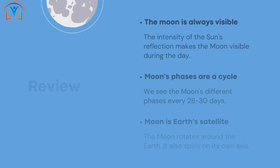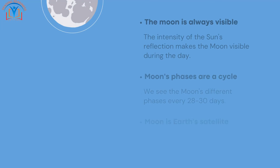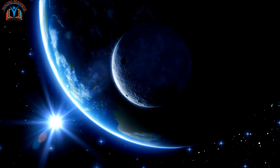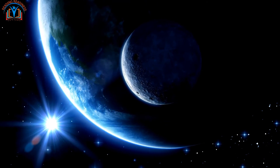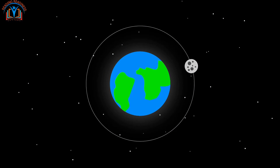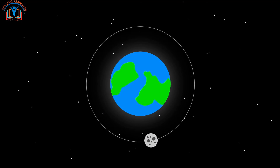Let's review. In this lesson we have learned: the moon is always visible — the intensity of the sun's reflection makes it visible even during the day; moon phases are a cycle — we see the moon's different phases every 28 to 30 days; and the moon is Earth's satellite — it rotates around the Earth and also spins on its own axis.